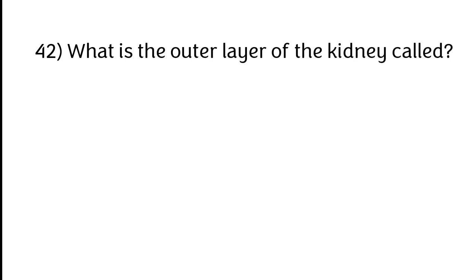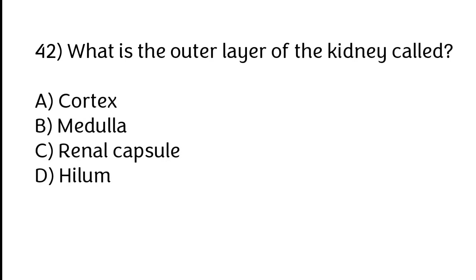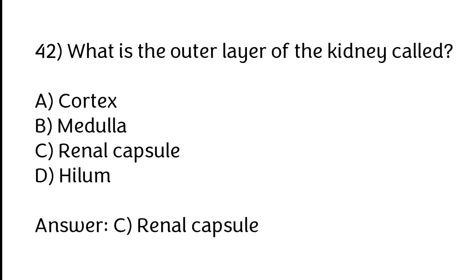What is the outer layer of the kidney called? Options: A) Cortex, B) Medulla, C) Renal capsule, D) Hilum. The correct answer is option C, renal capsule.